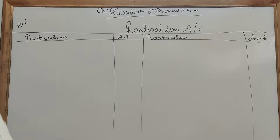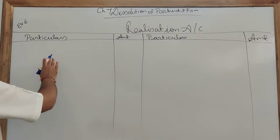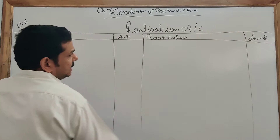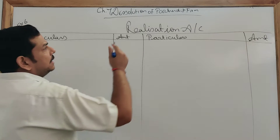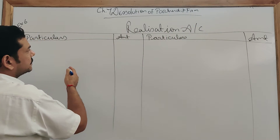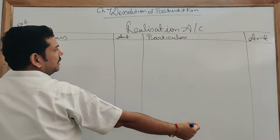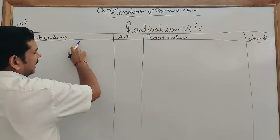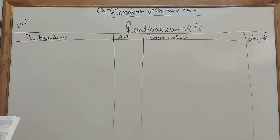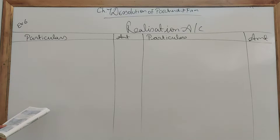Here I am showing you how to prepare a realization account. This is Example 6 in my book — I will give you a photo of this. A balance sheet is given to you. As I dictated in the theory part, first note down all the assets on the debit side and all the liabilities on the credit side. Everything will go in zigzag form. Assets are given on the liability side so they will come here; liabilities given on the left-hand side will come here. Payment of liabilities is on the opposite side, and assets are realized on the other side.